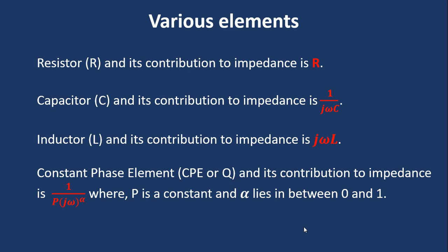Otherwise if the value of α is 1, then the impedance value is 1/(P(jω)^1), so it will be like 1/(jPω). So it is a pure capacitor. So that means constant phase element is an element whose impedance is between a pure resistor or pure capacitor.